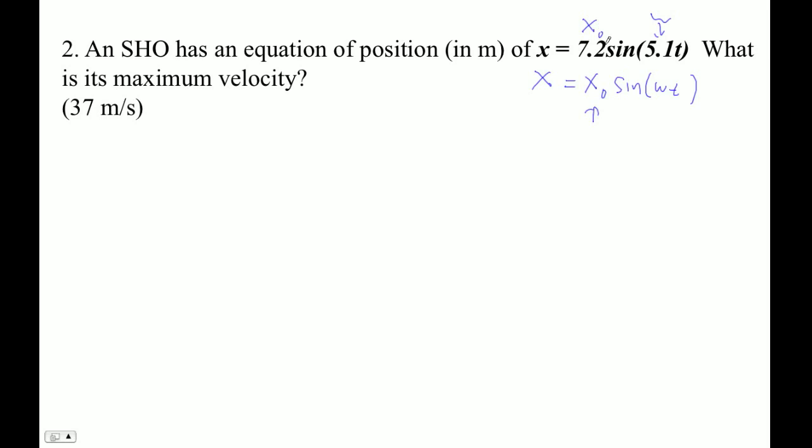Okay, so then what is its maximum velocity? Well, let's figure this out. There's omega. Maximum velocity happens when the position is zero, that is, it's right through equilibrium.